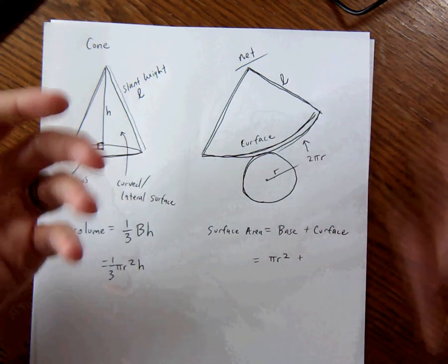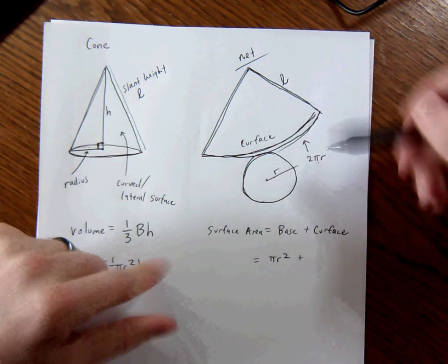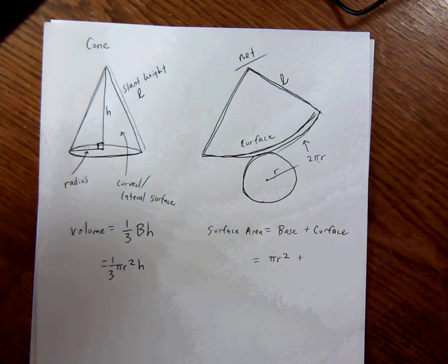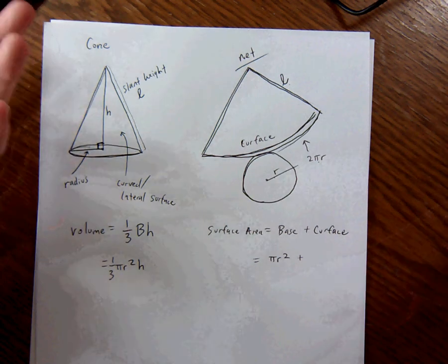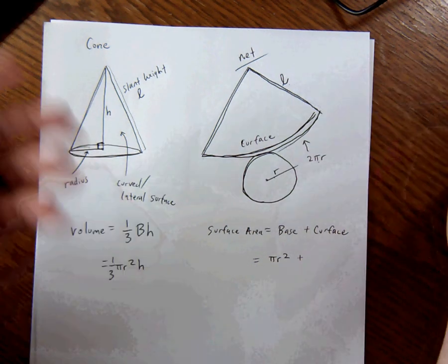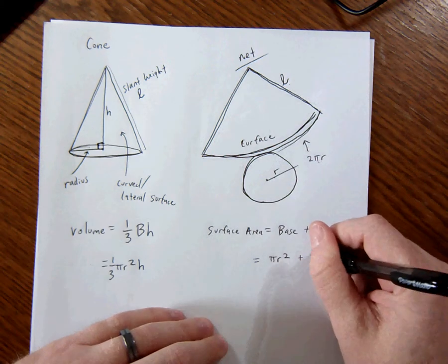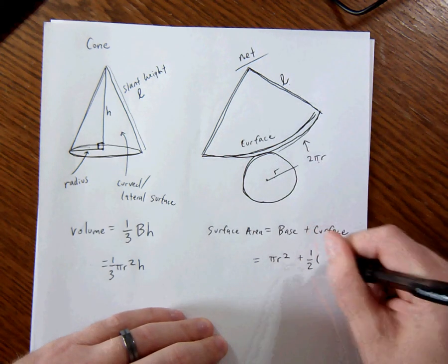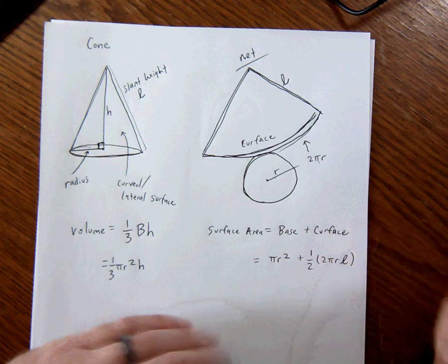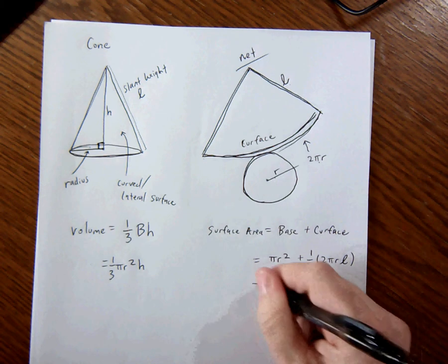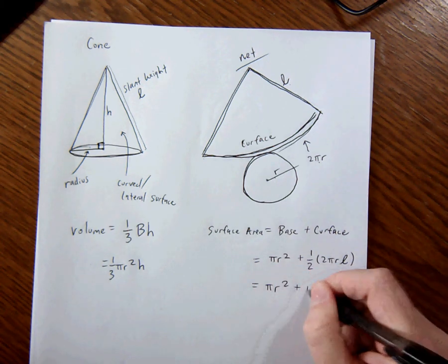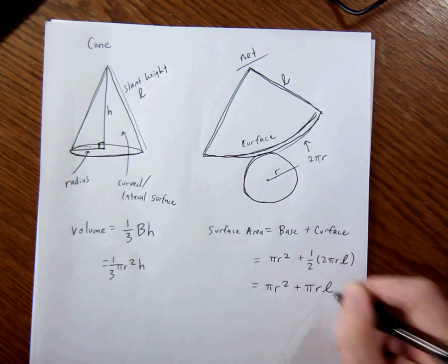So actually, it really isn't that bad. So imagine this is a triangle. So to find the area of the triangle, you would do two pi r times l, and then you would divide it by two, because the triangles, remember, would be base times height divided by two. So that's really what we're doing here. It's two pi r times l divided by two. So it ends up, how about I just write it down? So one-half two pi r times l, and then this one-half times two cancels out. So it actually ends up being pi r squared plus pi r l.